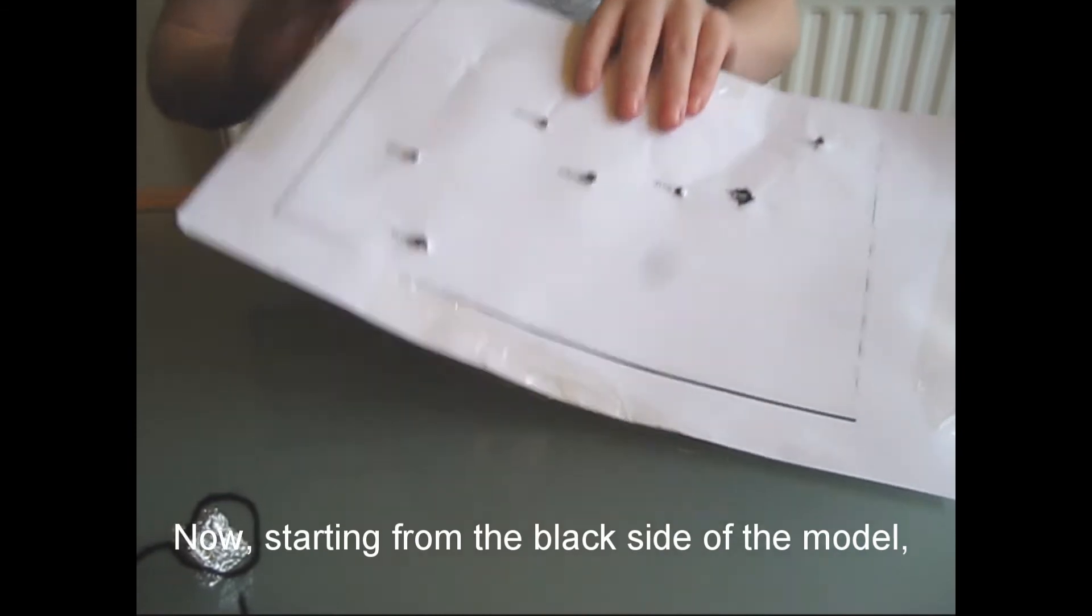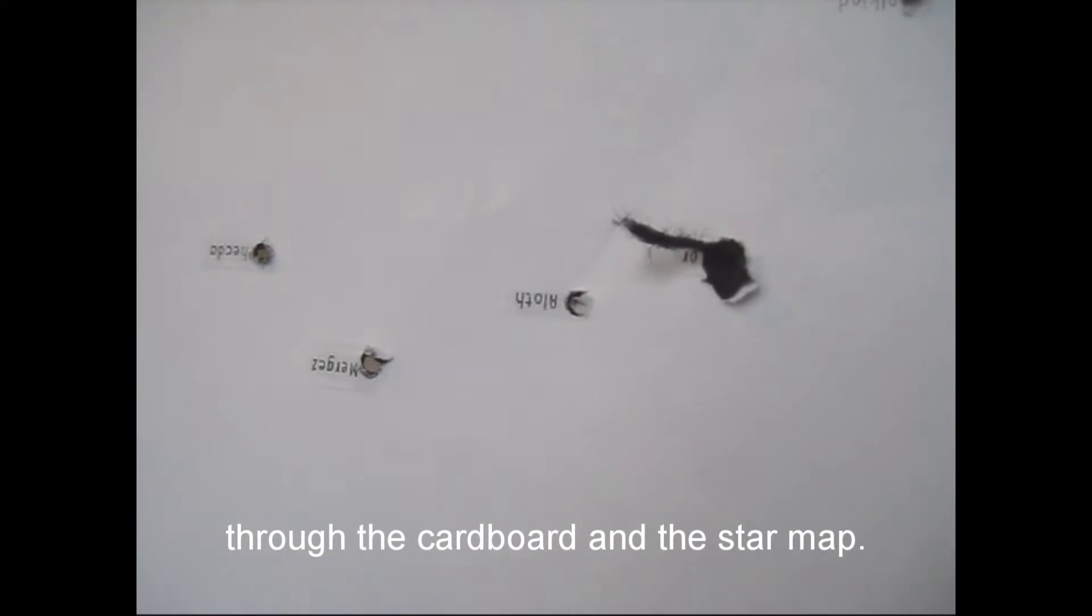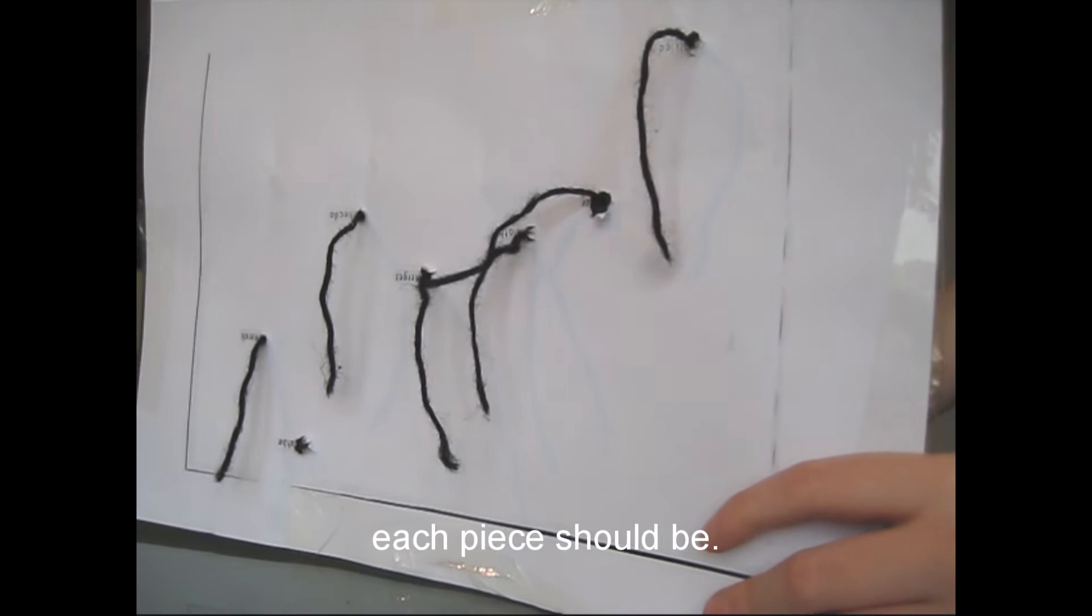Now, starting from the black side of the model, poke the free end of each piece of wool through the cardboard and the star map. Don't pull the wool all the way through, as we'll use maths to calculate how long each piece should be.